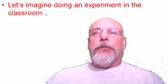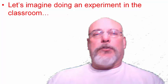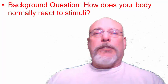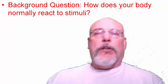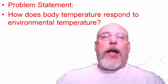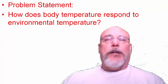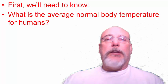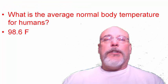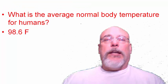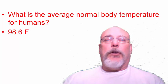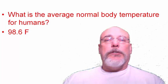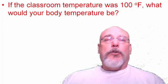A good way to think about homeostasis is to imagine doing an experiment in the classroom. One of the things I want you to think about is how does your body normally react to certain stimuli? For example, how does body temperature respond to environmental temperature? Your normal body temperature — the average for humans — is 98.6 degrees Fahrenheit. If I was in a room colder than 98.6, say 60 degrees, would my body temperature drop to 60?